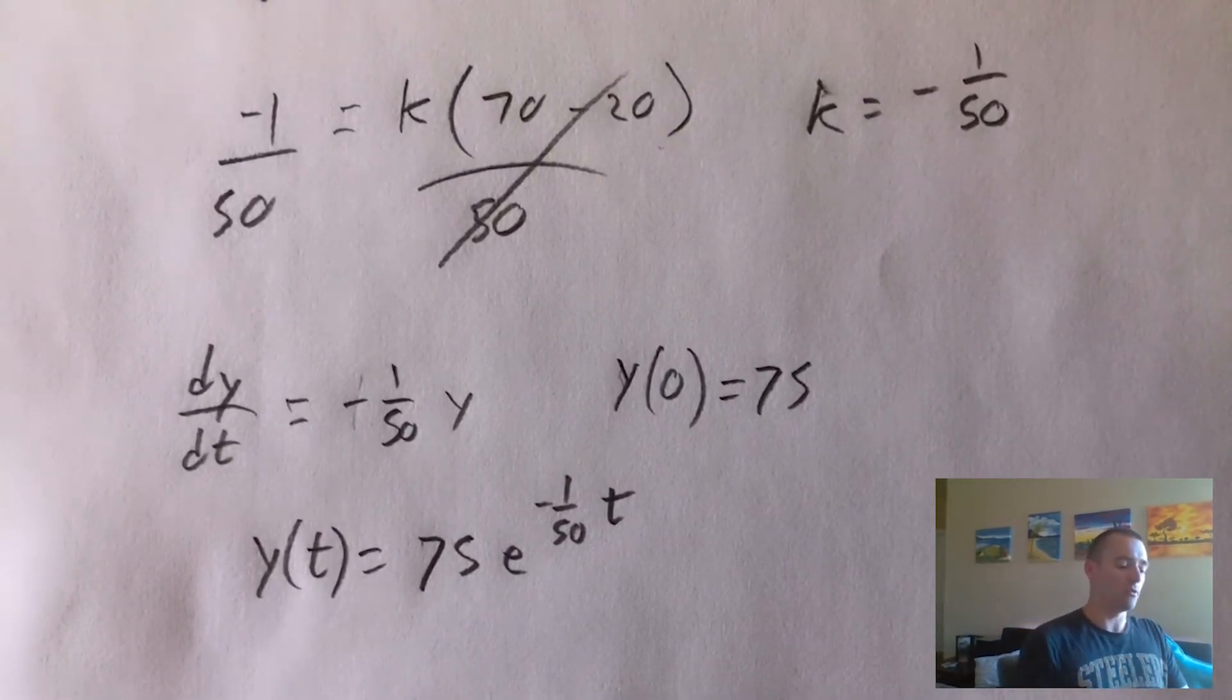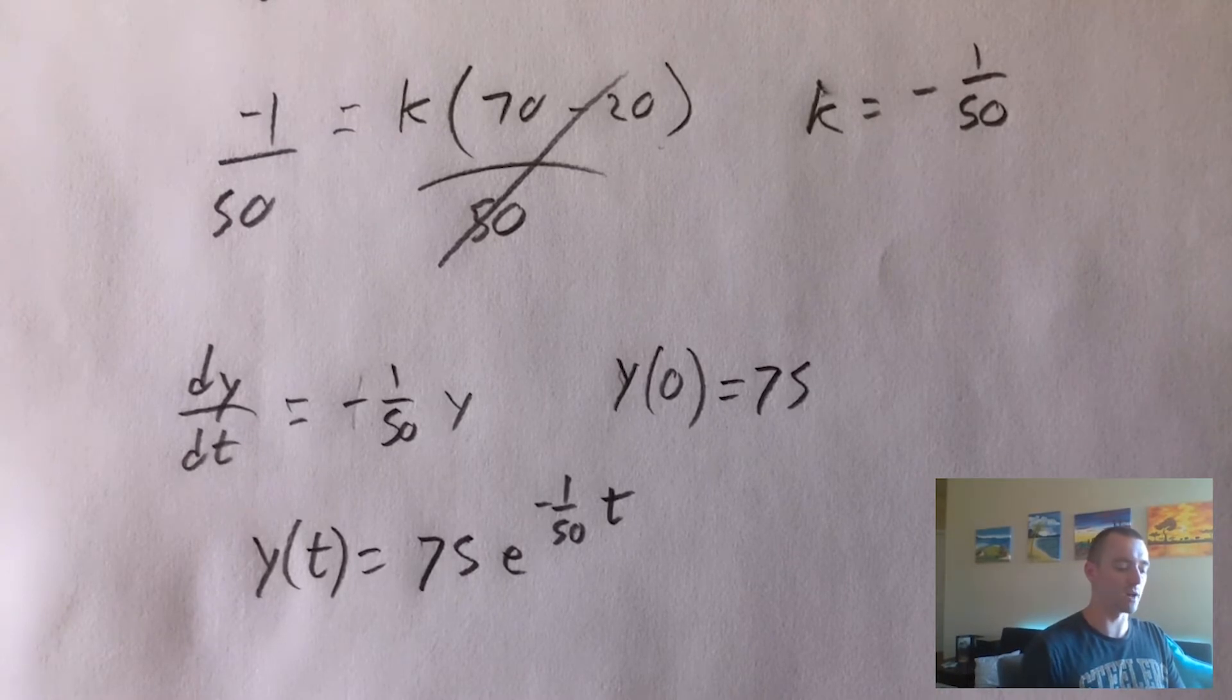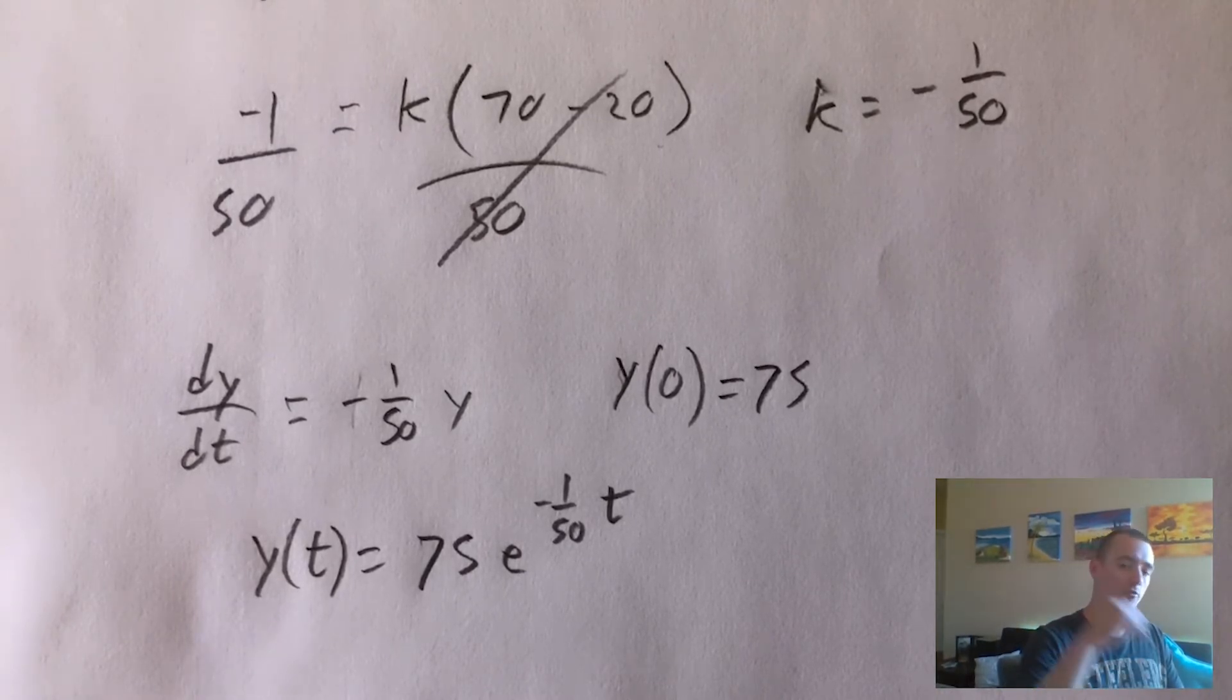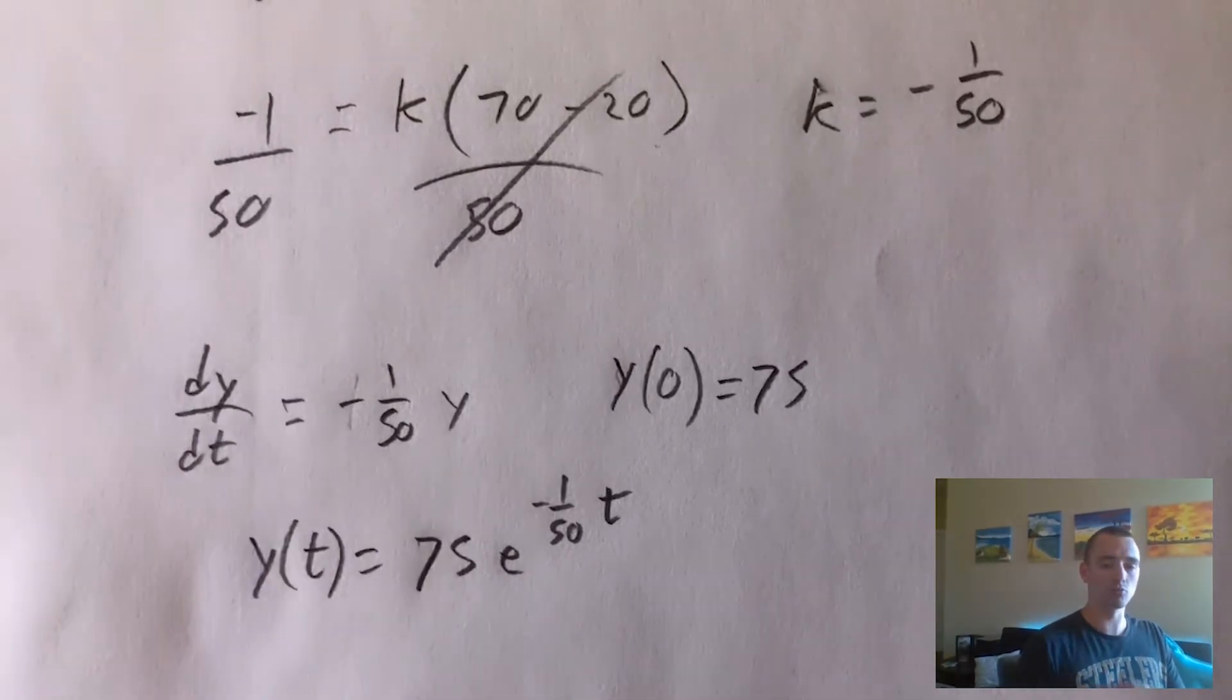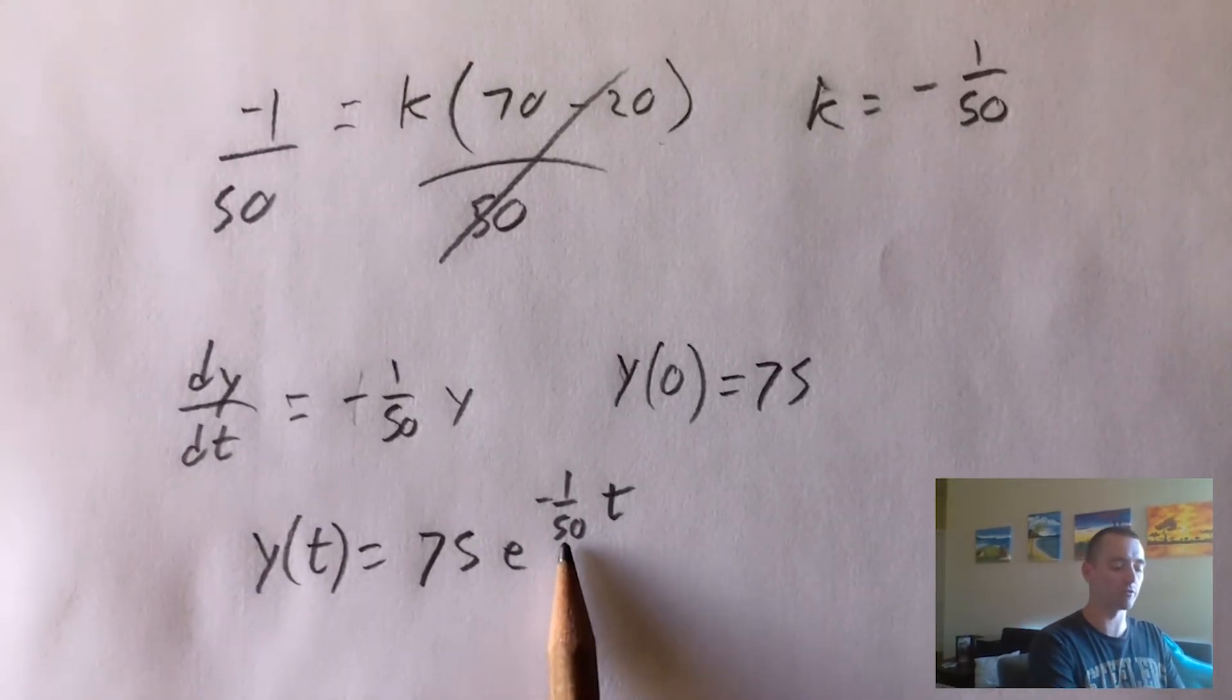So now what we want to do, like I said, we're trying to come up with an equation that tells us the temperature at some given time. So we want to go back now from Y back to our temperature. And the reason we can do this so soon is because we already solved for K.